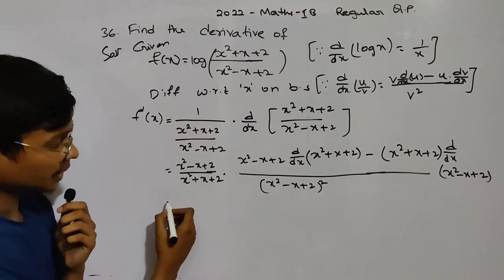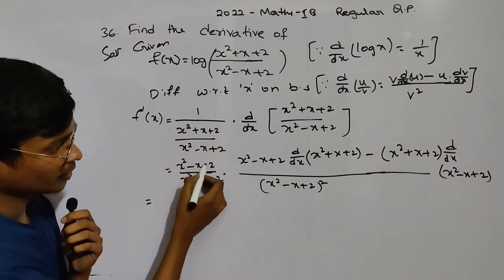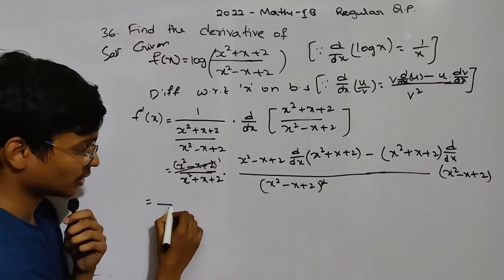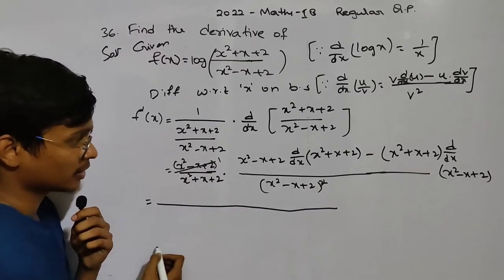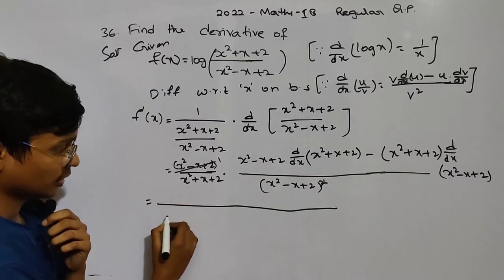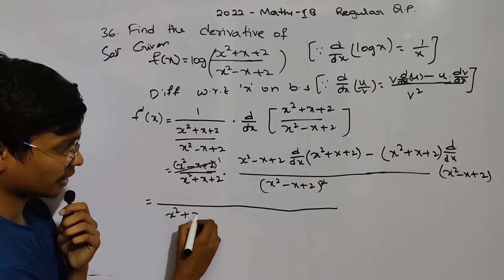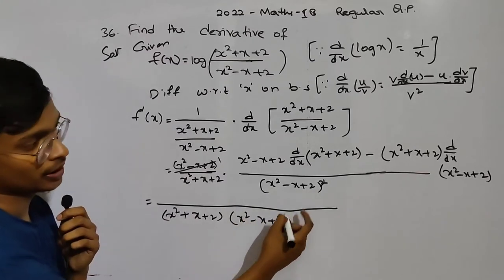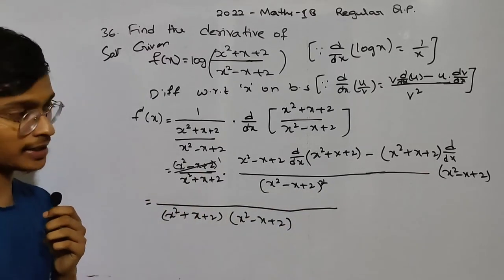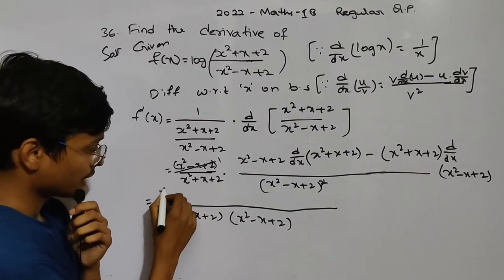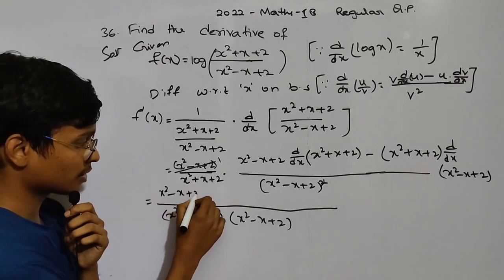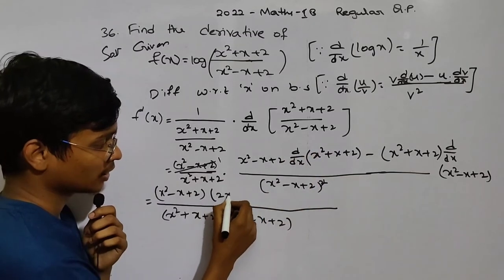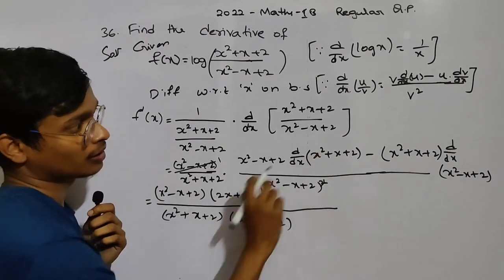This is the derivative application. This is whole power 1 and this is whole power 2. So, we cancel and simplify. The denominator is the same: (x squared plus x plus 2) times (x squared minus x plus 2). The derivative of x squared is 2x, derivative of x is 1, and constant is 0.